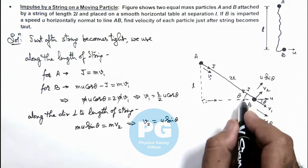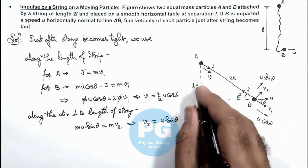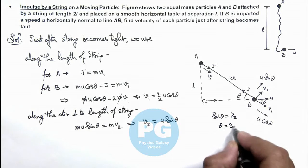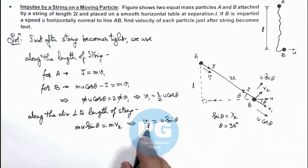And here we can see the value of sin theta is equal to l by 2l, it is 1 by 2. So the value of theta we take as 30 degree. So on substituting the values we are getting v1 and v2.